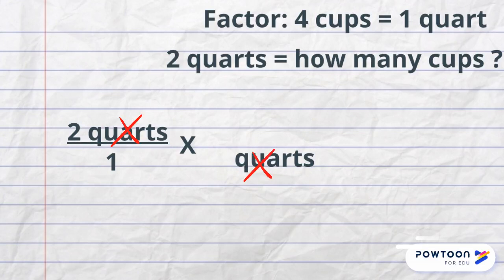Next, I look for factors, and in this case, there is only one given, and that is four cups equals one quart. Since quart needs to be in the denominator, I will put cups in the numerator, then put in my numbers. Now cancel quarts and multiply the factors.